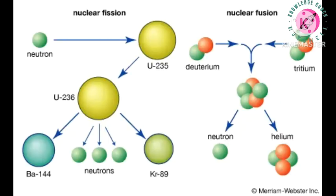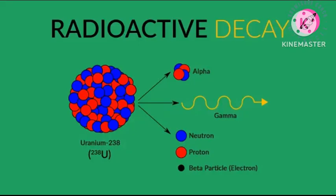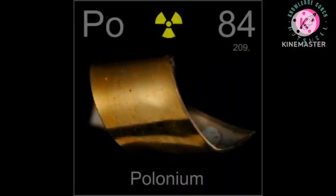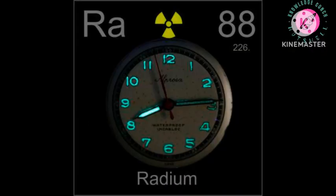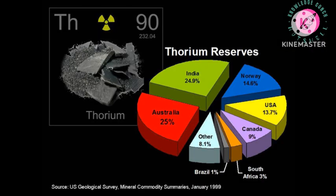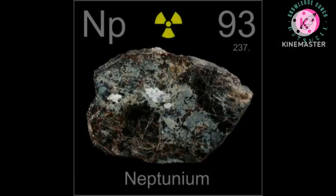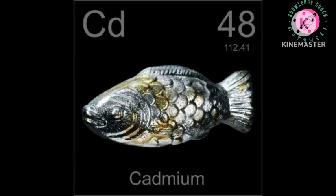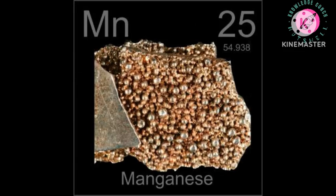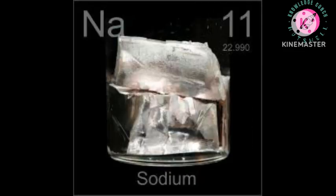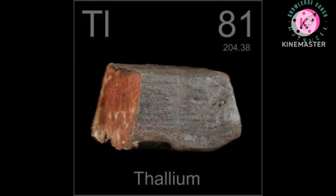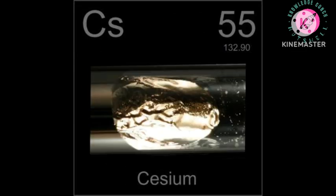These isotopes undergo radioactive decay over time, transforming into other elements at a predictable rate. Examples include: Polonium, Radium, Thorium, Uranium, Neptunium, Plutonium, Barium, Cadmium, Cobalt, Manganese, Sodium, Zinc, Strontium, Thallium, Carbon, Cesium, and others.